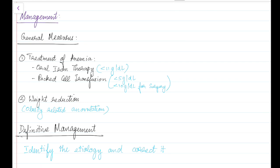Now let us see about the management of a patient with abnormal uterine bleeding. General measures include treatment of anemia and lifestyle modifications. Anemia can be treated by oral iron therapy. When hemoglobin is less than 11 g/dL, packed cell transfusion should be done if hemoglobin is less than 5 g/dL, or when hemoglobin is less than 10 g/dL and the patient is posted for surgery.